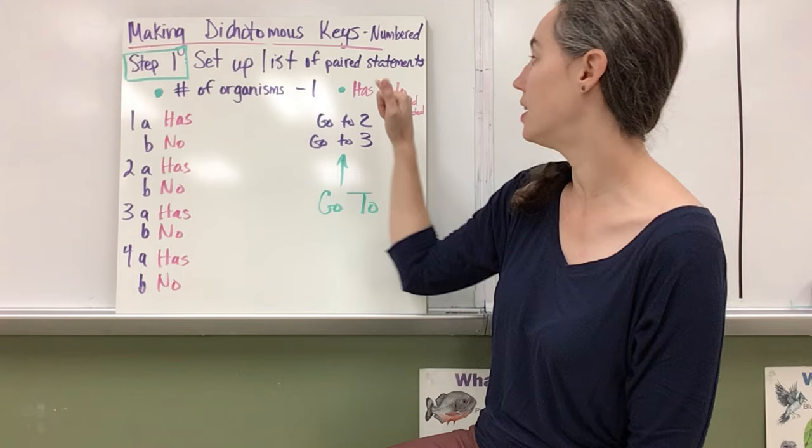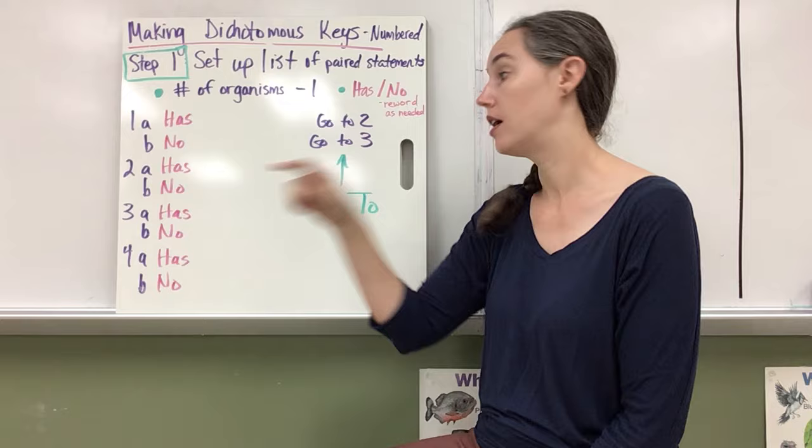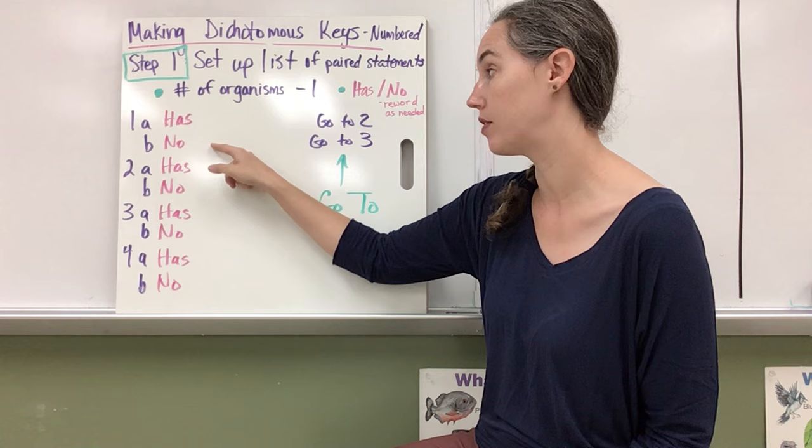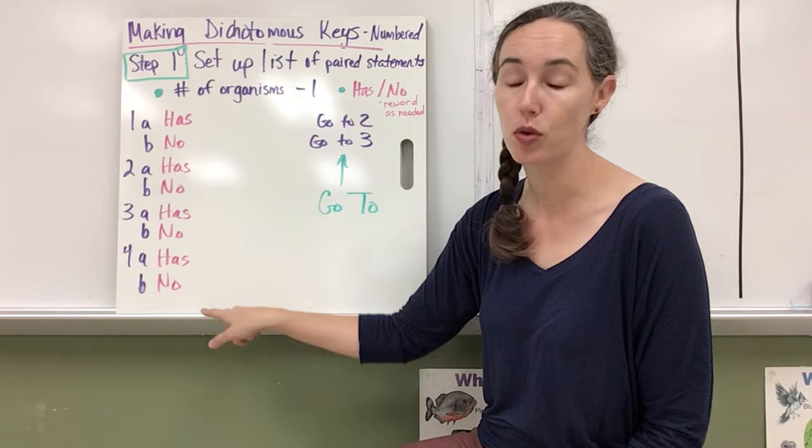So I set that up: one A, B, two A, B, down through four. Then I'm going to set up has or does not have for each one, because basically we're differentiating these based on their physical traits. So they either are going to have that trait or not have that trait. So I have has or no next to each set of statements.